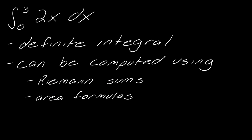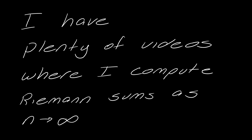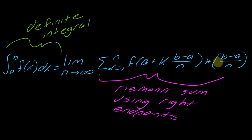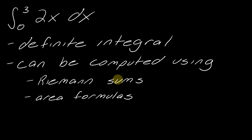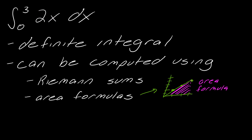Riemann sums are pretty heavy — I have videos where I compute them as n goes to infinity, so check those out if you want more examples. But you can also use a straight-up area formula. For this example, I go from 0 to 3 on the graph of 2x, draw a line down to the x-axis, and I get a triangle. Bada bing bada boom — I can just calculate the area of that triangle.